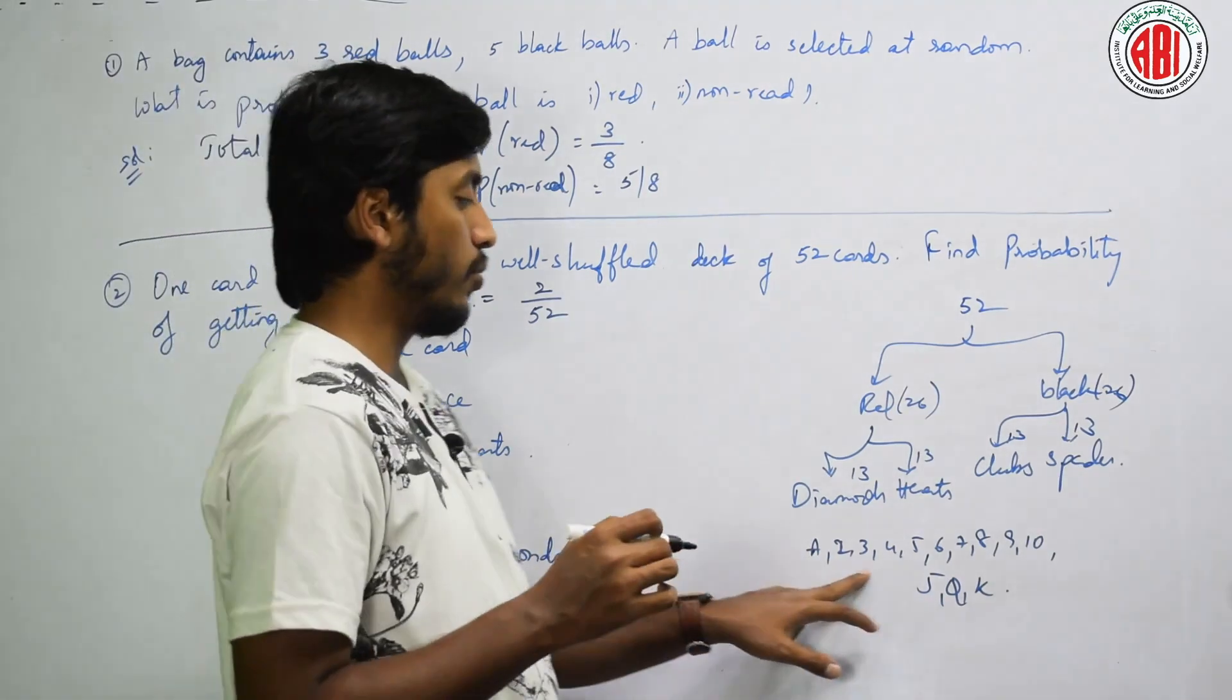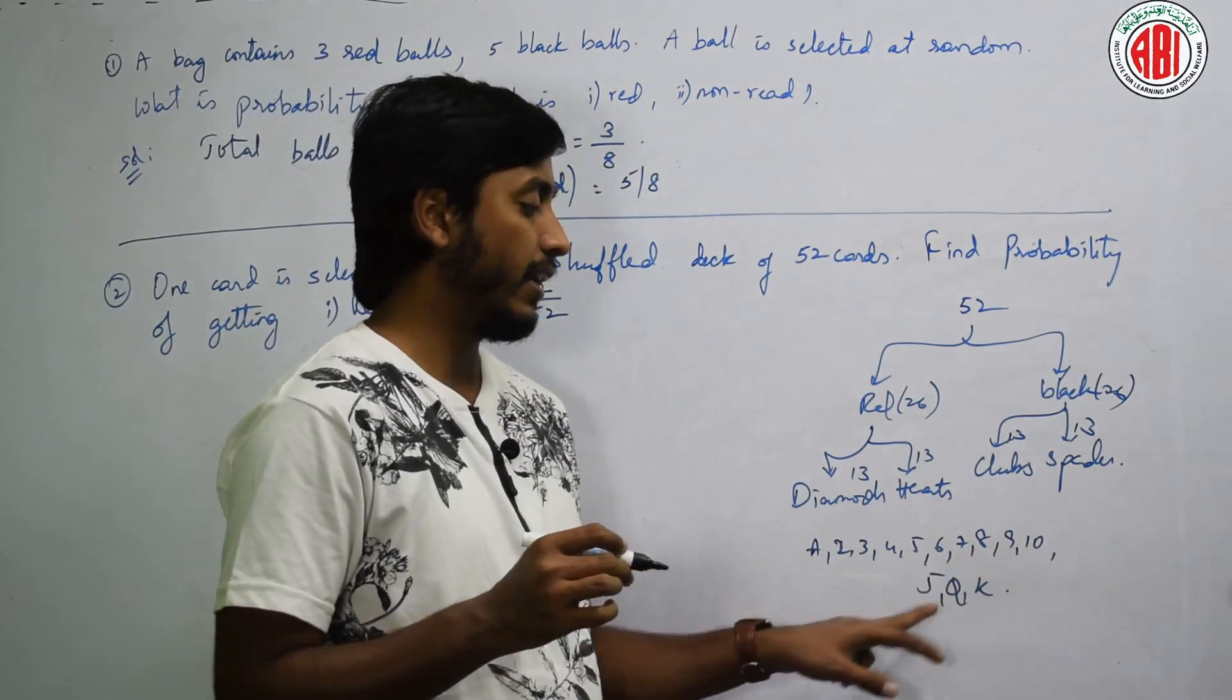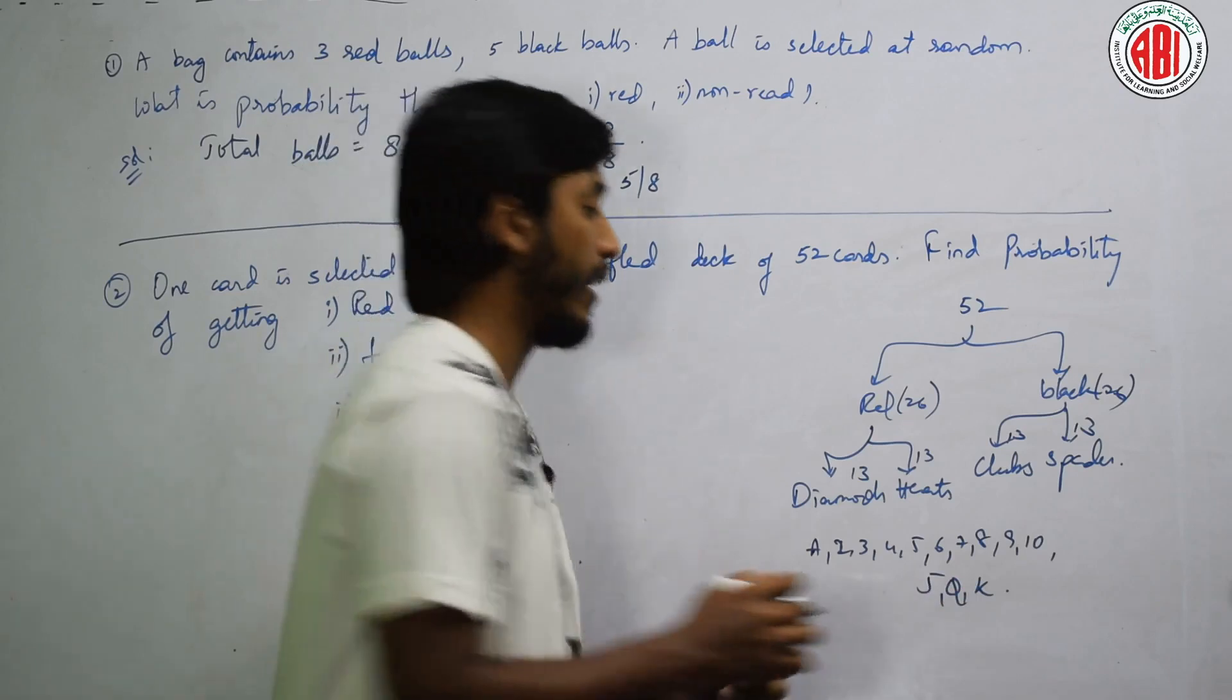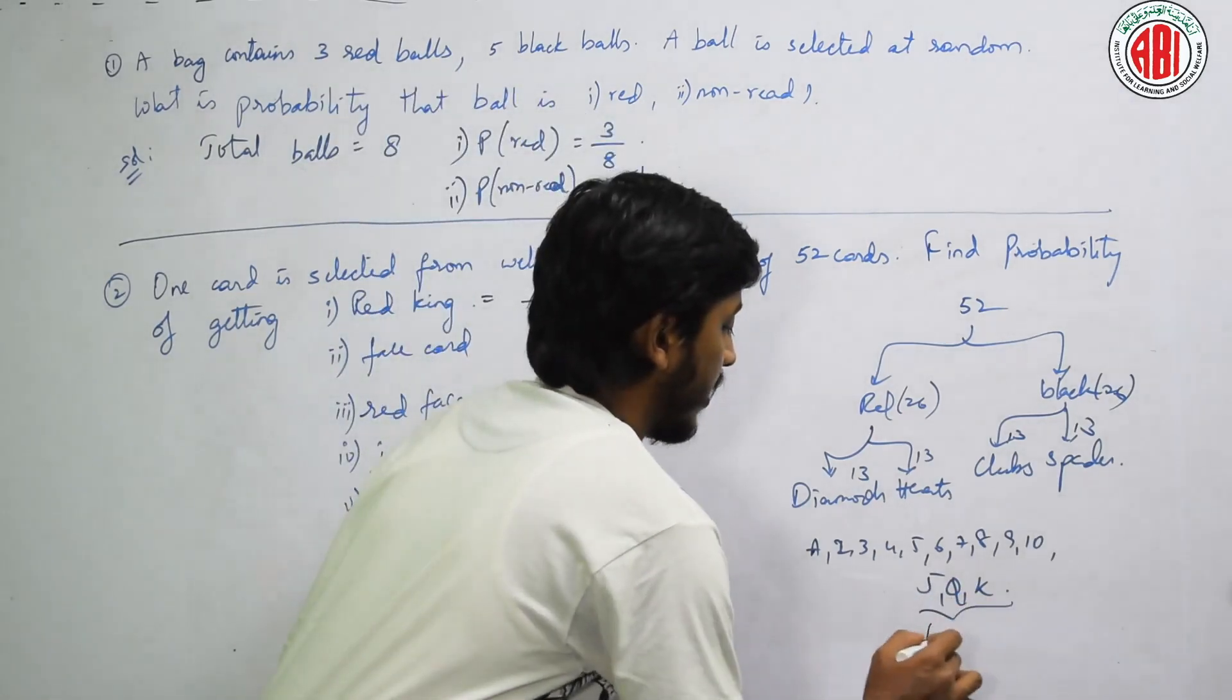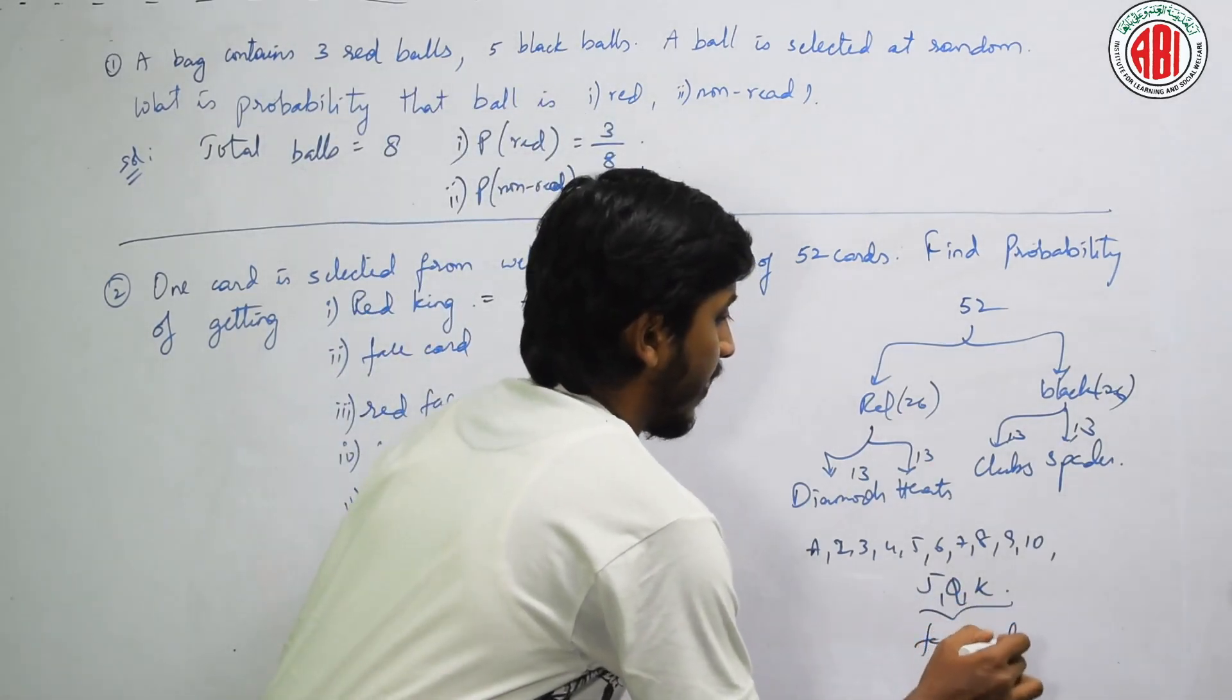Those 13 cards are A, 2, 3, 4, 5, 6, 7, 8, 9, 10 and J, Q, K. What does this J, Q, K called as? Face cards.